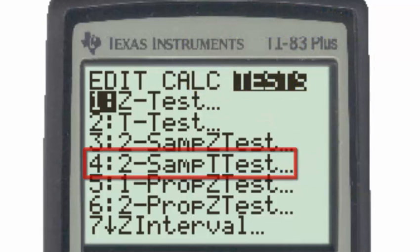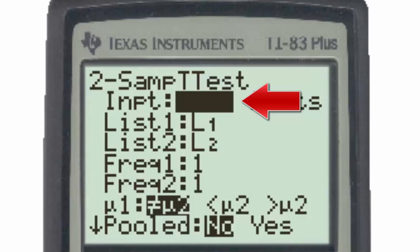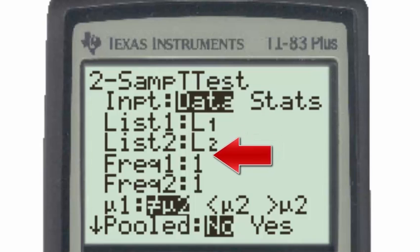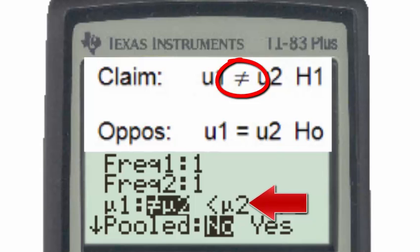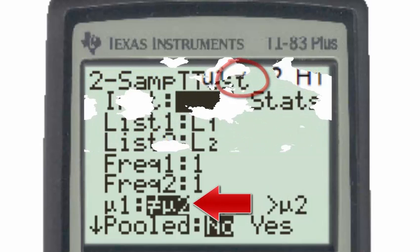Going to number four with the input in the form of data, we use list one as L1 and list two as L2. The frequency in both cases is simply one, and selecting the inequality sign, the alternative hypothesis in our hypothesis test is not equal to.